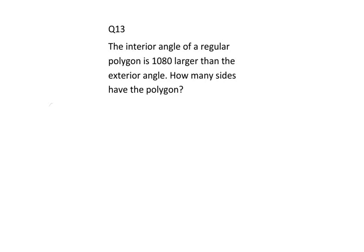The interior angle of a regular polygon is 108 degrees larger than the exterior angle. How many sides does the polygon have? What we should know is that when we take the exterior angle plus the interior angle, we should get 180.